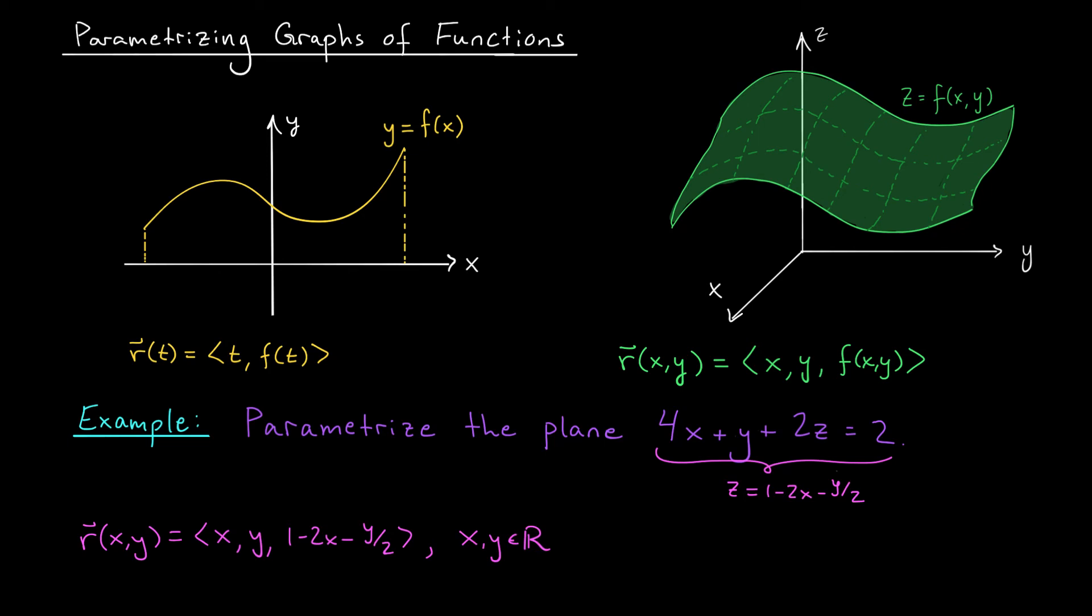Of course, there's nothing special in this example about z. If I had wanted to express y as a function of the other variables, I could have done that as well. By moving x and z to the other side, we would get y equals 2 minus 4x minus 2z. And therefore, we have a different parametrization. Our new parameters are x and z. And our parametric equation is r of x, z equals x, 2 minus 4x minus 2z, and z. Where here, x and z are allowed to take on any real number.